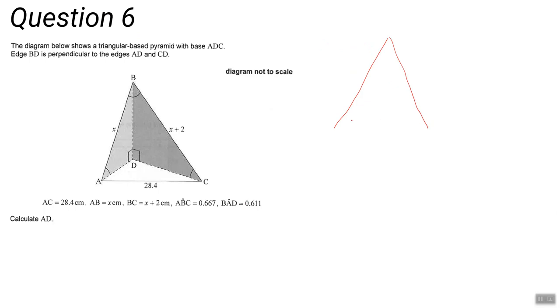The first is to use the triangle ABC. So we know some information about ABC: we know that that's x, that's x plus 2, and that's 28.4. And we also know because it's given here, ABC is 0.667.